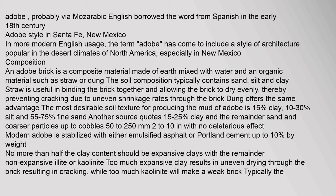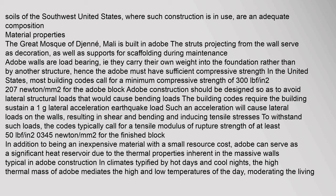An adobe brick is a composite material made of earth mixed with water and an organic material such as straw or dung. The soil composition typically contains sand, silt, and clay. Straw is useful in binding the brick together and allowing the brick to dry evenly, thereby preventing cracking due to uneven shrinkage rates. Dung offers the same advantage. The most desirable soil texture for producing adobe mud is 15% clay, 10–30% silt, and 55–75% fine sand. Another source quotes 15–25% clay and the remainder sand and coarser particles up to cobbles. Soils of the southwest United States, where such construction is in use, are an adequate composition.